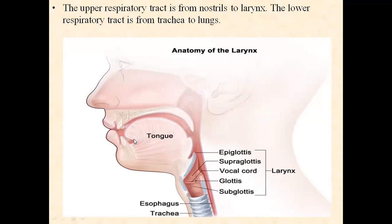Let us see this picture clearly. This is the nose and this is the nostril; inside the nostril there is a nasal chamber. This is the trachea, and this is the mouth — the mouth and nasal chamber share a common pathway which is the pharynx. This is our trachea and this is the epiglottis.